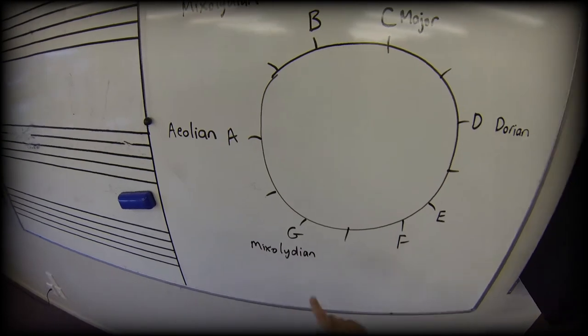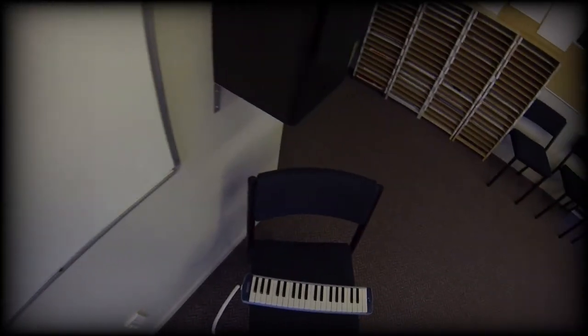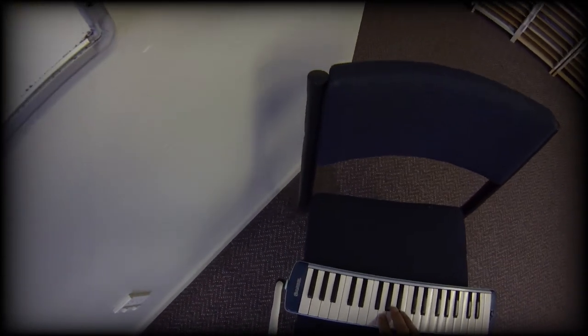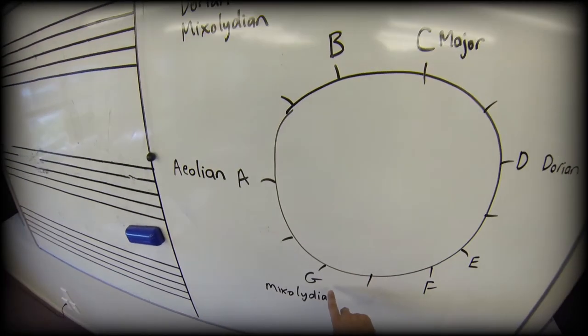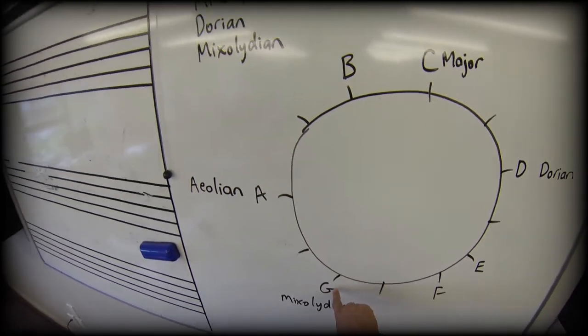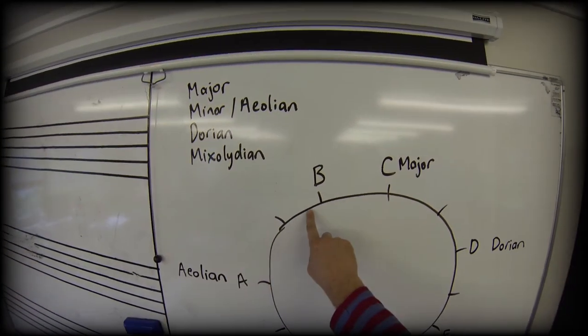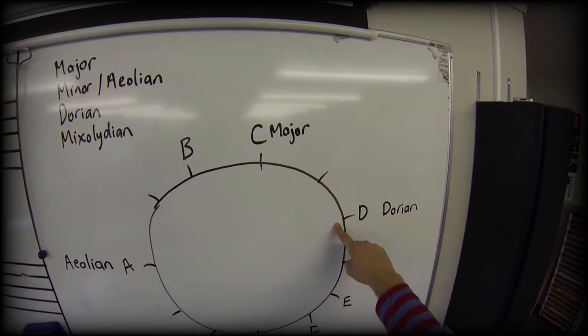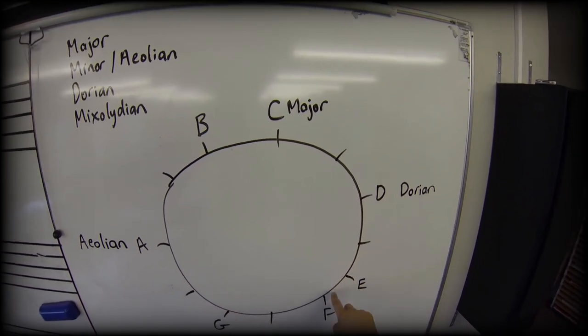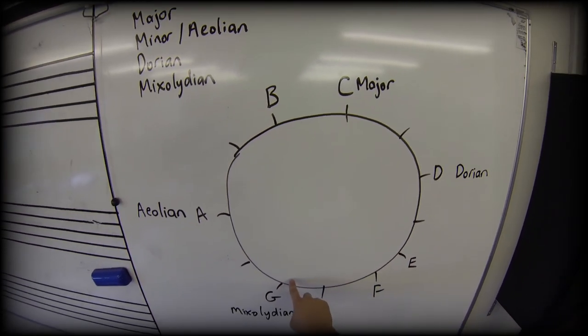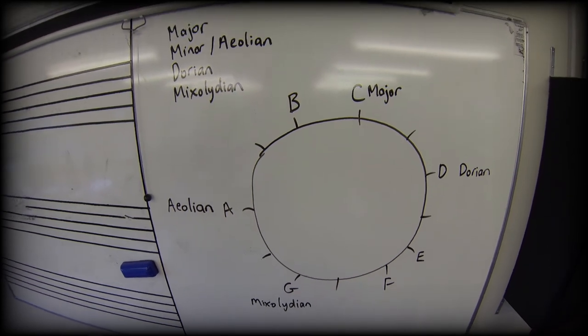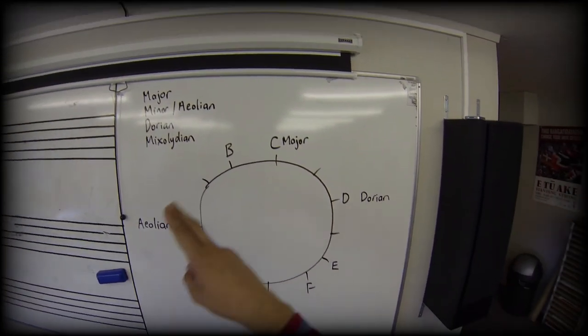G, let's give it a go. Where's my G? Root, two, two, one, two, two, one, two. So that's the mixolydian mode.